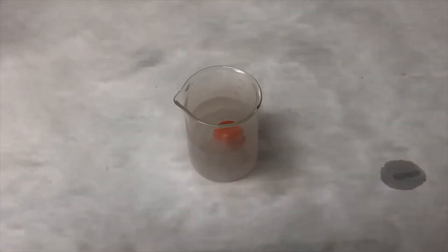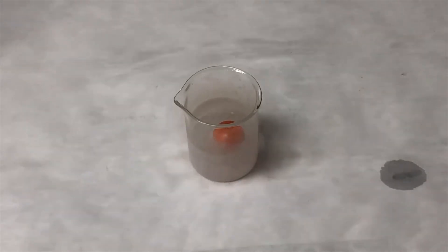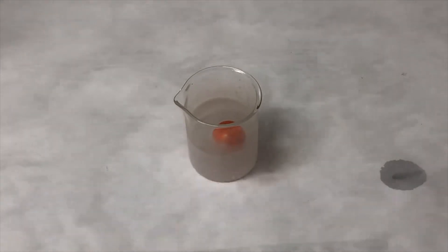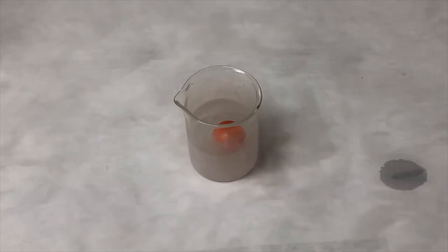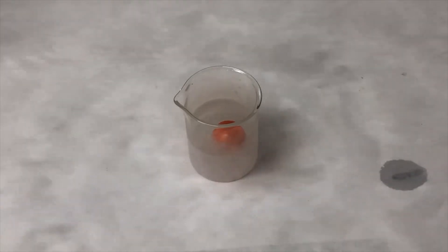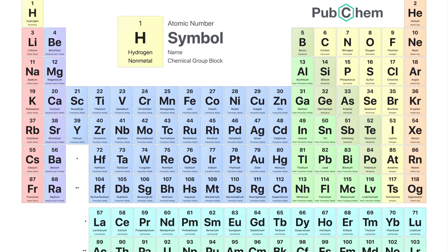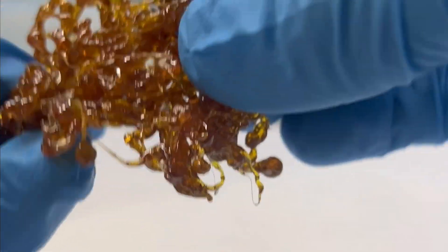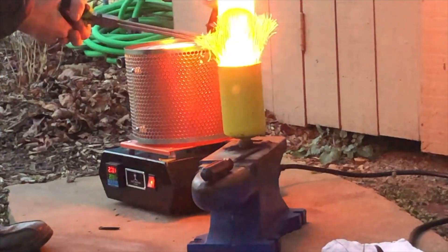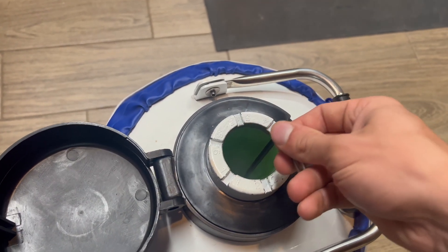Liquid nitrogen is known for its frigid ability to freeze almost anything within a few seconds. Nitrogen is a common, practical element, so let's extract some from the air we breathe. There are 118 elements on the periodic table, each of which has unique properties. Join me as I make as many as possible in this series while exploring the science behind them. Welcome to Wheeler Scientific.